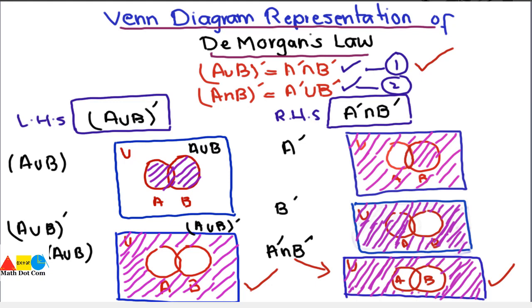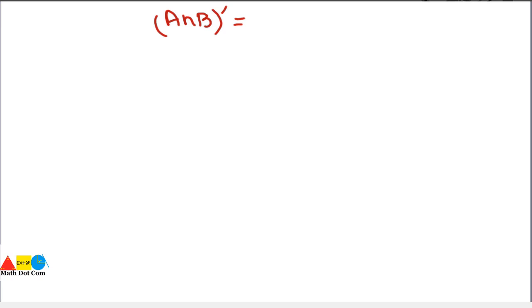Now let's represent Form 2 of De Morgan's law on the Venn diagram. Form 2 is: A intersection B whole complement equals A complement union B complement. On one side we will draw A intersection B whole complement, and on the other side A complement union B complement.